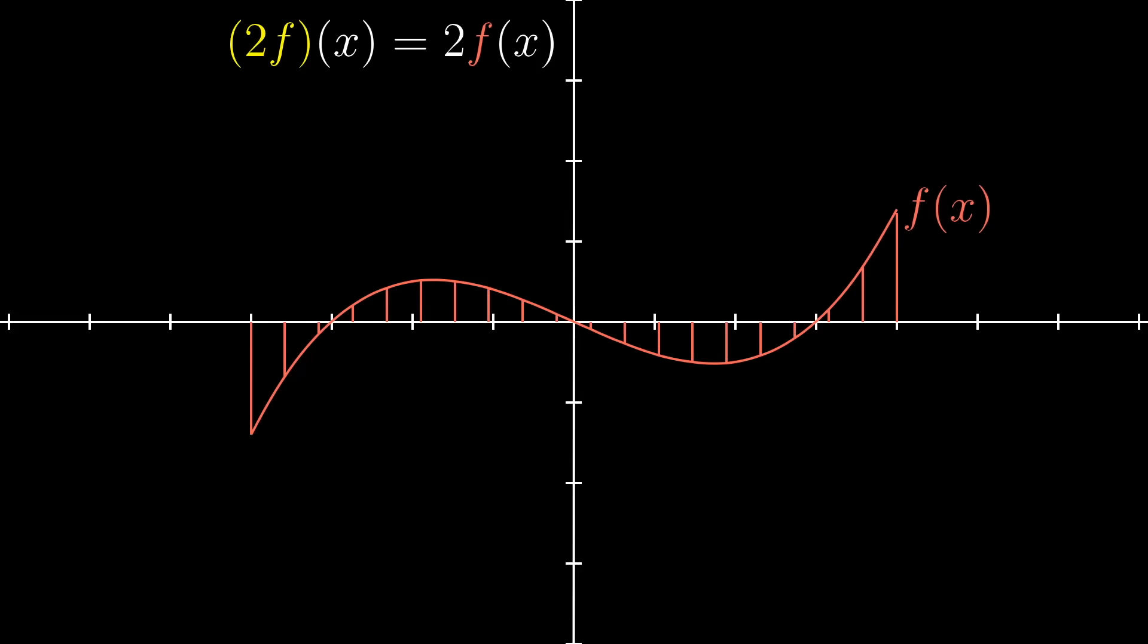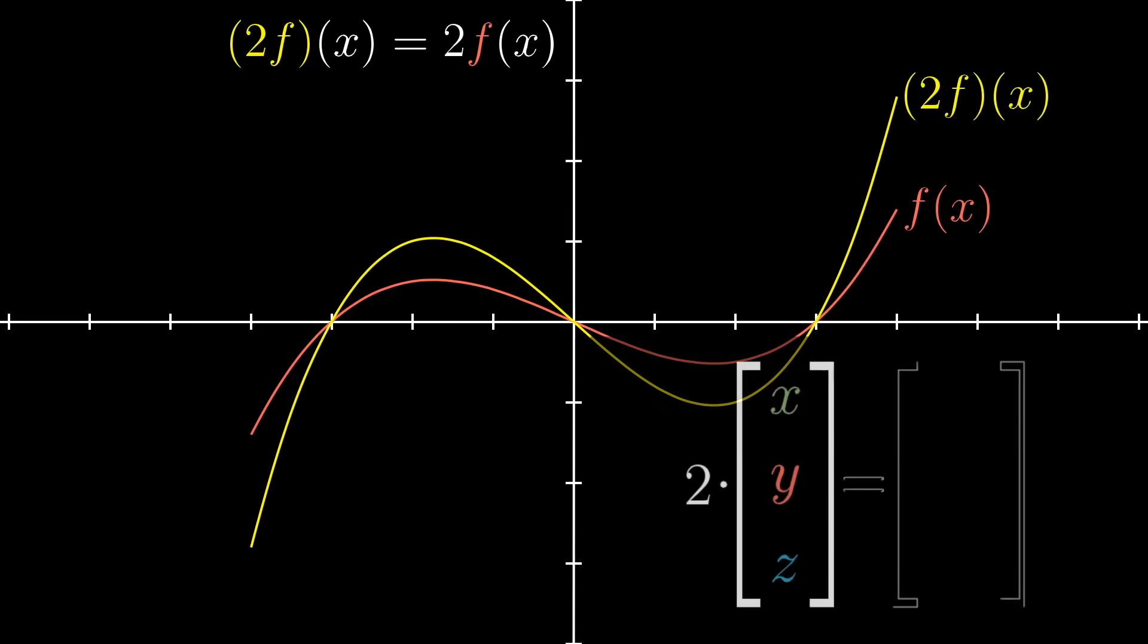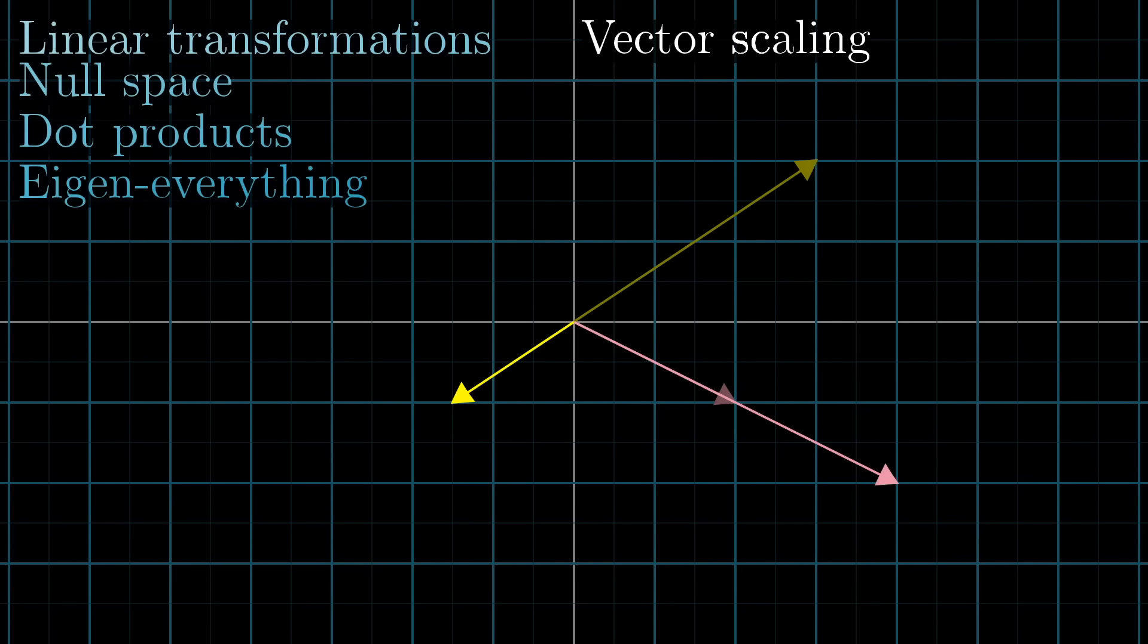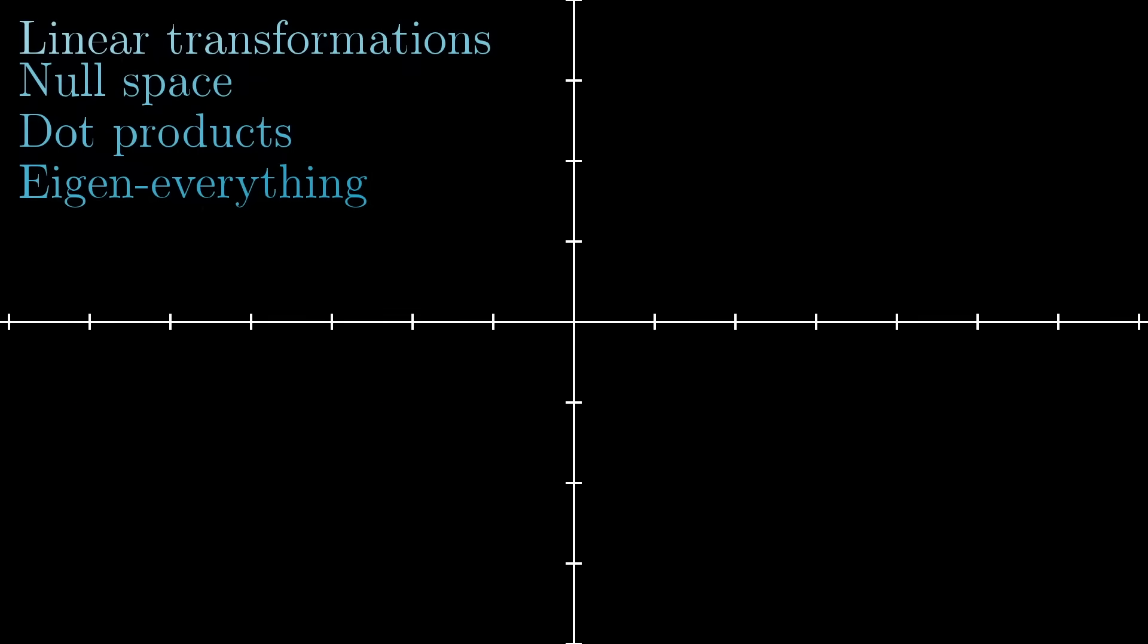Similarly, there's a sensible notion for scaling a function by a real number. Just scale all of the outputs by that number. And again, this is analogous to scaling a vector coordinate by coordinate. It just feels like there's infinitely many coordinates. Now, given that the only thing vectors can really do is get added together or scaled, it feels like we should be able to take the same useful constructs and problem-solving techniques of linear algebra that were originally thought about in the context of arrows and space, and apply them to functions as well.